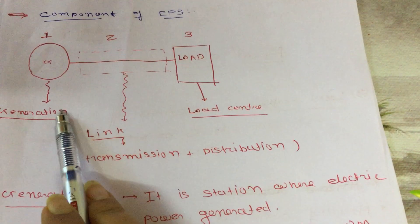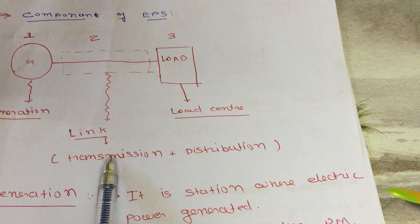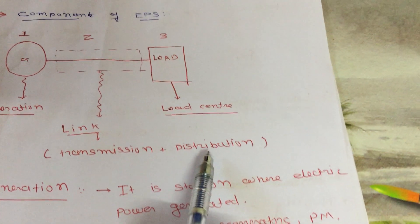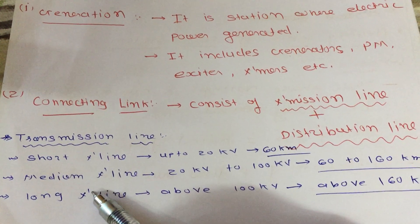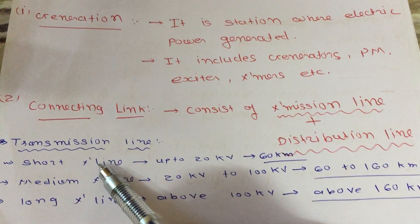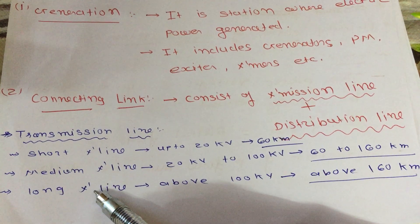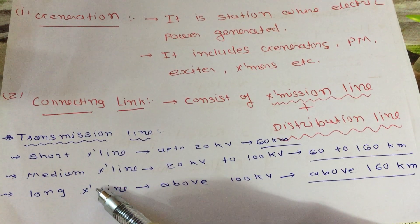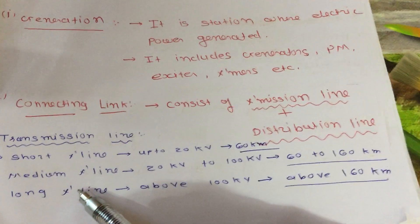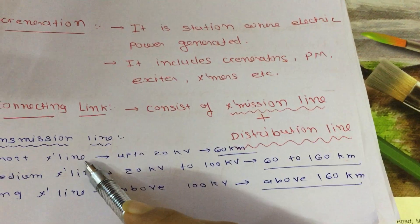The second one is the connecting link, which connects generation with the load center. The connecting link consists of two sections: transmission line and distribution line. Transmission lines can be classified into three categories: short, medium, and long transmission lines.